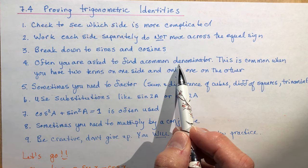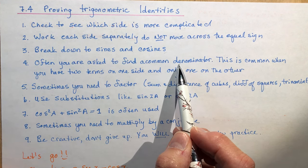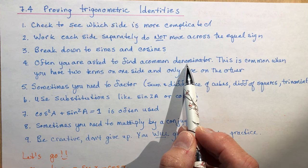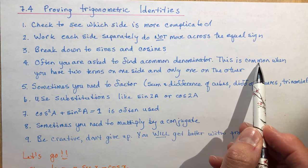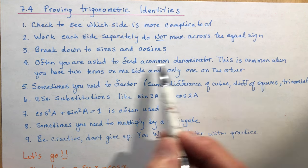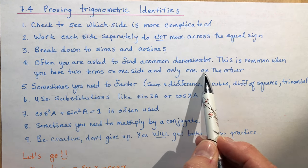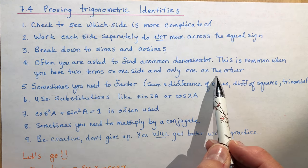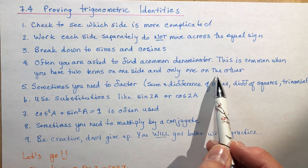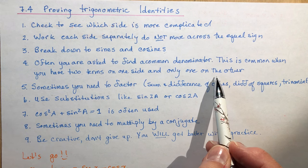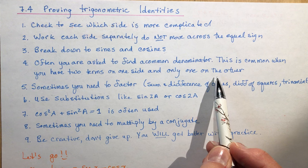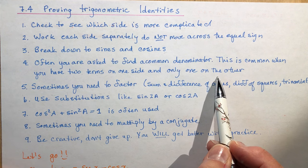Often you're asked to find a common denominator. Not asked to, but you will need to find a common denominator. This is common, isn't that funny, common when you have two terms on one side and only one on the other. In other words, how are you going to get from having two parts to one part? Well, obviously you're going to have to somehow add or subtract them together to get this one part.